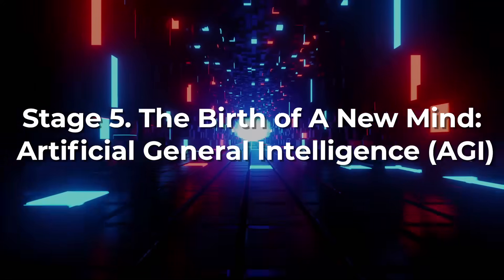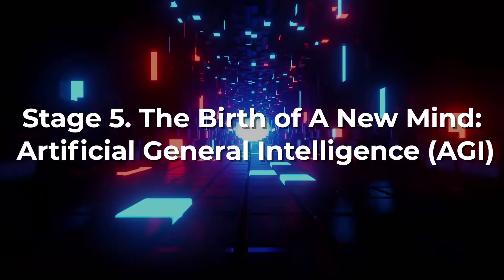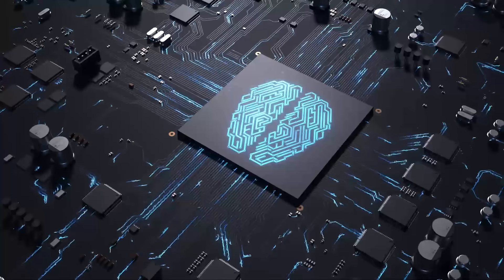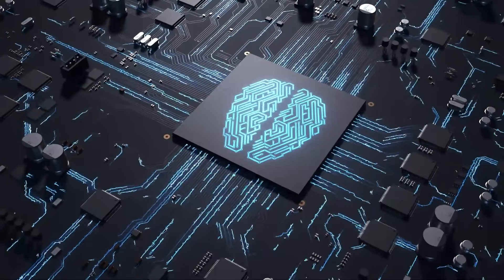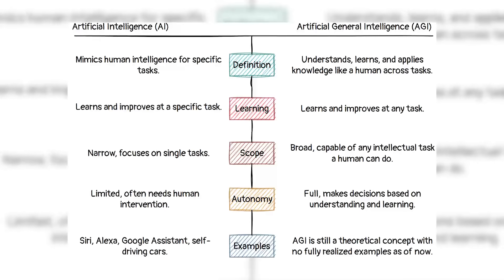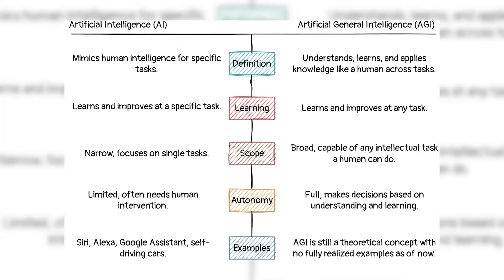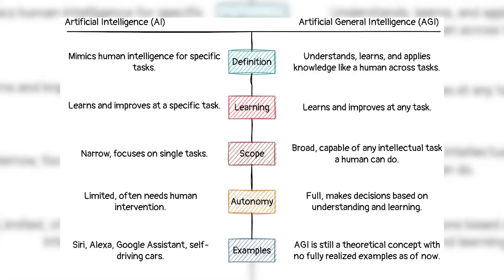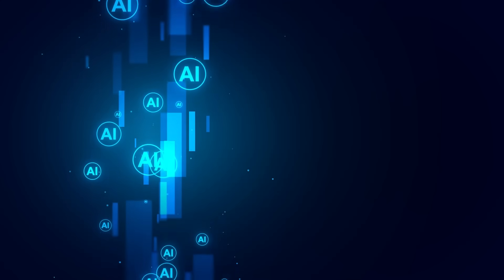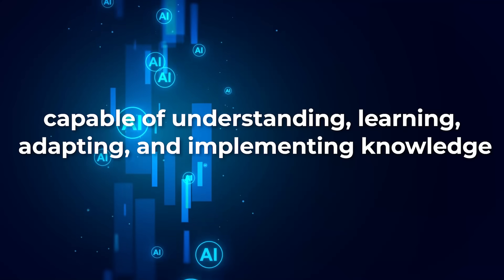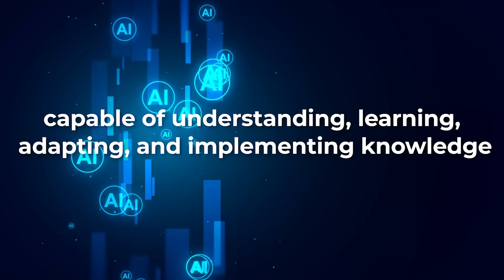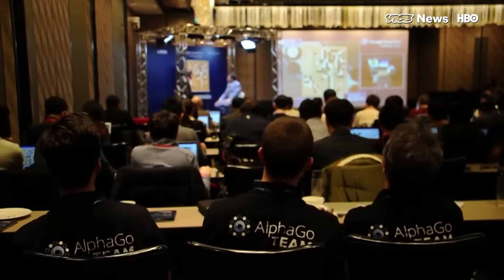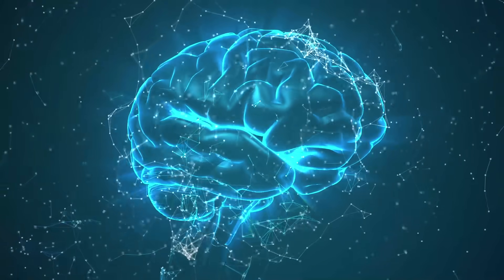Stage 5: The Birth of a New Mind — Artificial General Intelligence (AGI). As we step into the realm of AGI, we're entering a world of AI that, for now, remains largely theoretical. AGI, also known as strong AI, refers to a type of artificial intelligence that equals human intelligence in all aspects. An AGI system would be capable of understanding, learning, adapting, and implementing knowledge across a wide range of tasks. It wouldn't just excel in one domain, like the AI systems of Stage 3, or even just exhibit human-like reasoning like Stage 4.